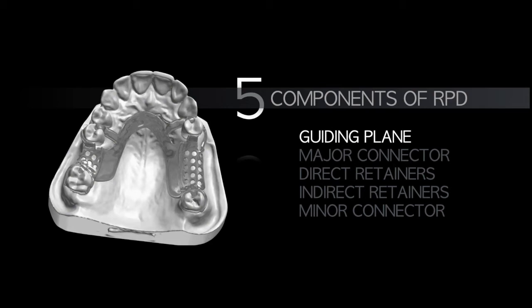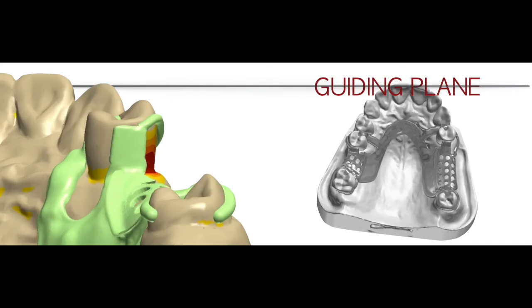The five components are: guiding plane, major connector, direct retainer, indirect retainer, and minor connector. These are the sequence you follow to design any partially edentulous condition. Let's look at the first component—guiding plane. The guiding plane is the part of the metal framework that engages the proximal surface adjacent to the abutment tooth. In this case, there is one on the mesial of tooth number 15, and also on teeth number 2 and number 4—totaling four guiding planes.